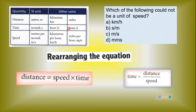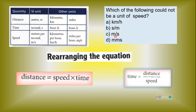This is how we define units. If distance is measured in meters, kilometers, or miles, and time is measured in seconds or hours, then the unit of speed will be meters per second, kilometers per hour, or miles per hour. Which of the following could not be a unit of speed? Kilometers per hour — yes, it is possible. Seconds per meter — not possible, it is time divided by distance. Meters per second — possible. Millimeters multiplied by seconds — not possible.